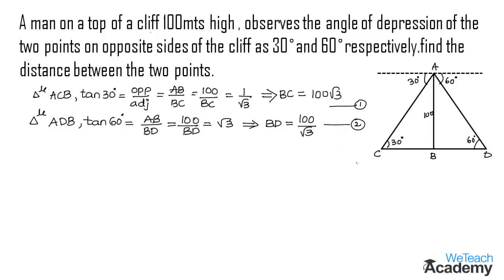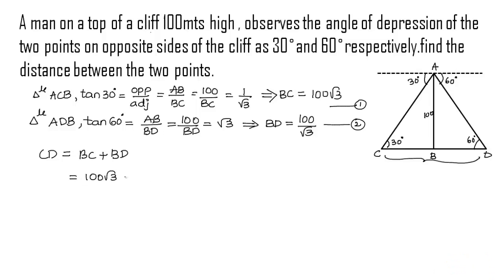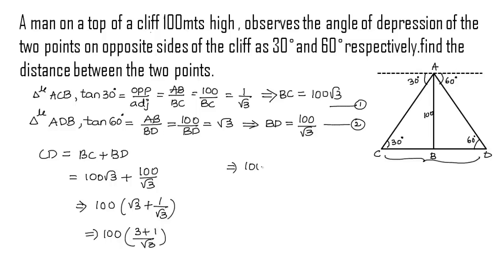From equations 1 and 2 we can find the value of CD — that is, the distance from C to D. CD equals BC plus BD. Substituting both values, we get 100√3 plus 100/√3. Taking 100 as the common factor, we get 100 into (√3 plus 1/√3), which equals 100 into (3 plus 1)/√3, giving 100 into 4/√3. Multiplying, CD equals 400/√3.